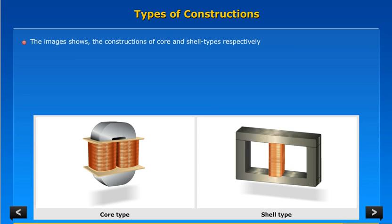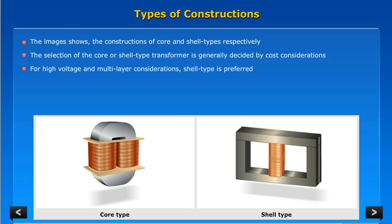The images show the constructions of core and shell types respectively. The selection of the core or shell type transformer is generally decided by cost considerations. For high voltage and multi-layer considerations, shell type is preferred.